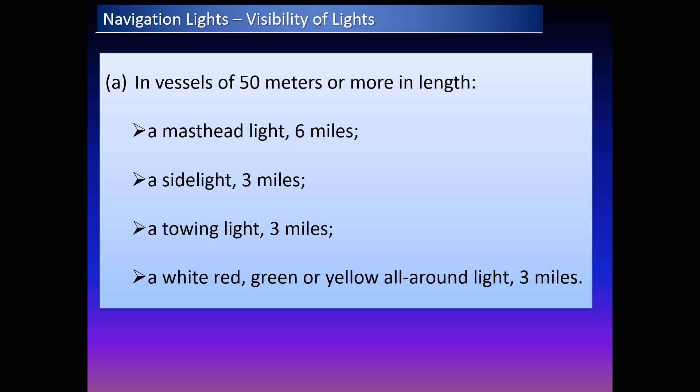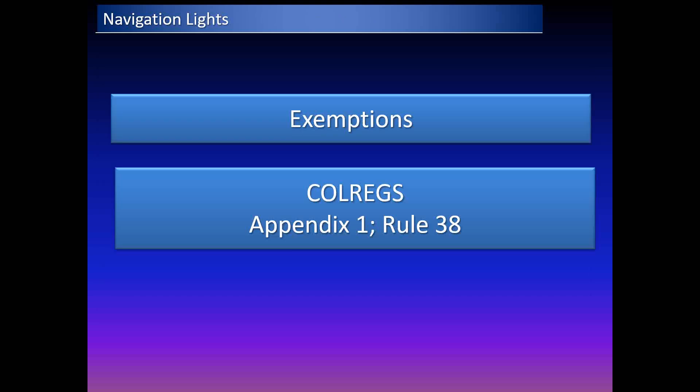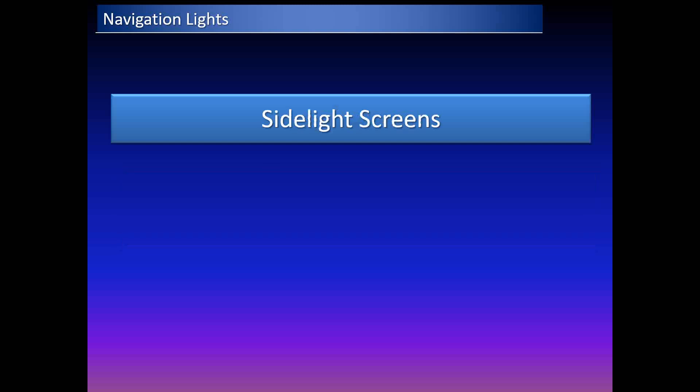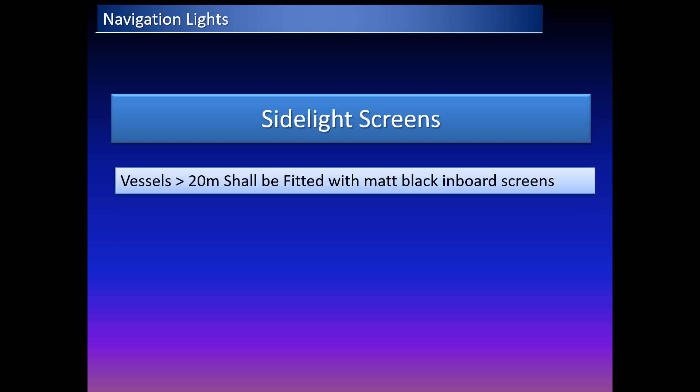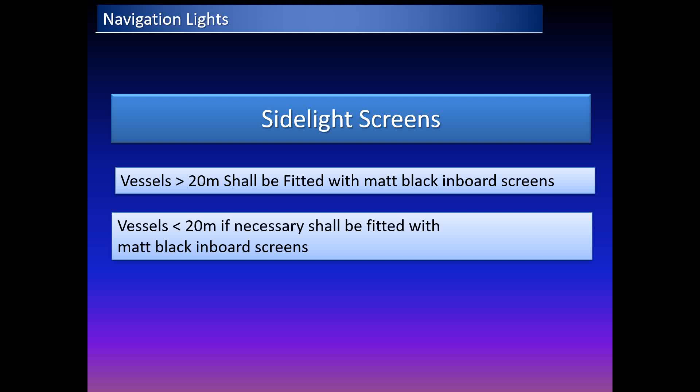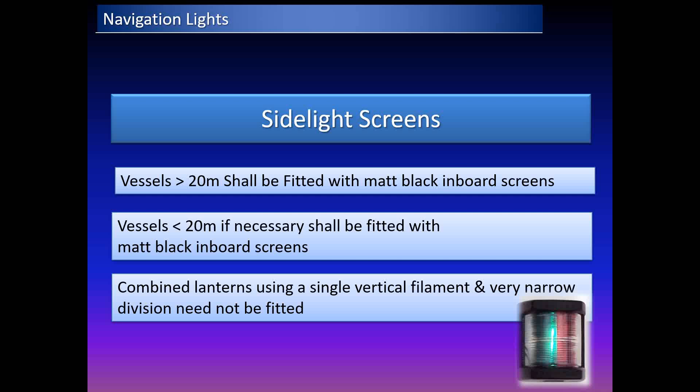Most officers will be sailing on vessels of 50 meters or more, and these are the minimum visibility requirements. Certain exemptions are provided in Appendix 1, Rule 38 of the collision regulations. Regarding sidelight screens: sidelights on vessels of 20 meters or more shall be fitted with inboard screens painted matte black to reduce glare. On vessels of less than 20 meters, sidelights may use a combined lantern with a single vertical filament and a very narrow division between the green and red sections, and external screens need not be fitted.